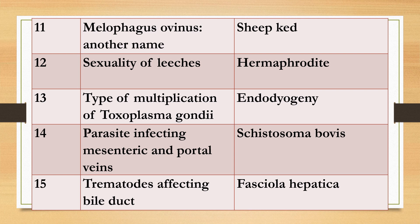Question eleven: Melophagus ovinus — what is another name? Answer: sheep ked. Twelve: Sexuality of leeches. Answer: hermaphrodite. Thirteen: Type of multiplication of Toxoplasma gondii. Answer: endodyogeny. Fourteen: Parasite infecting mesentery and portal veins. Answer: Schistosoma bovis.